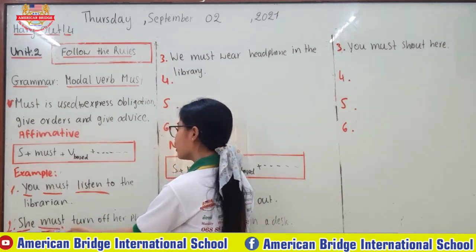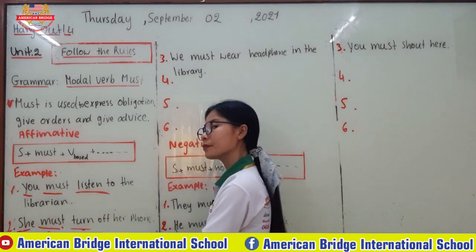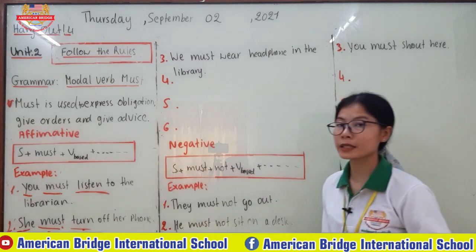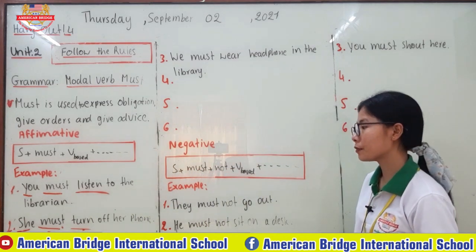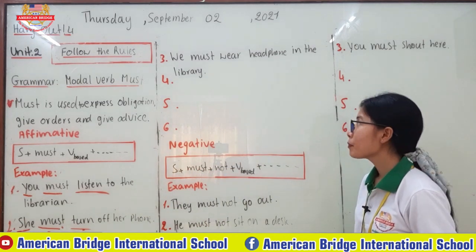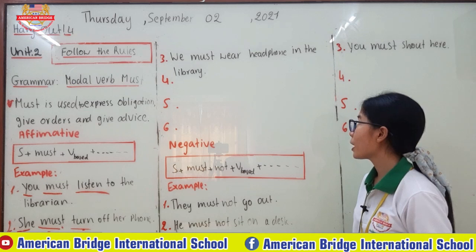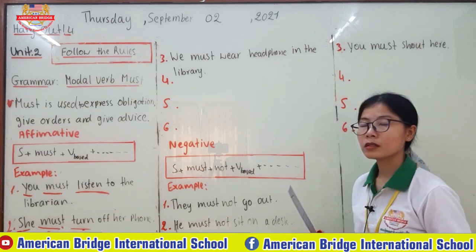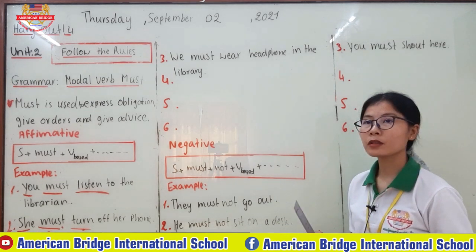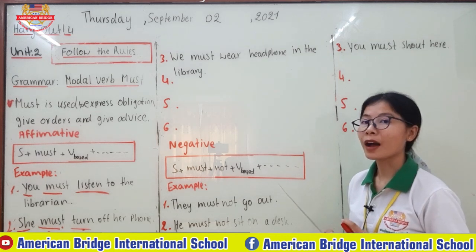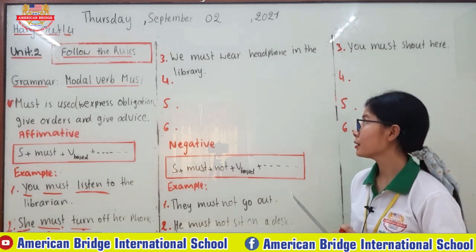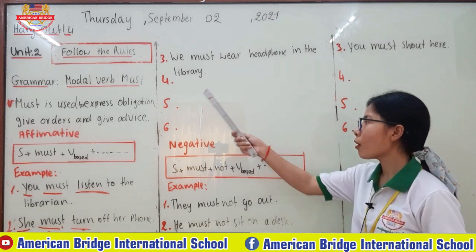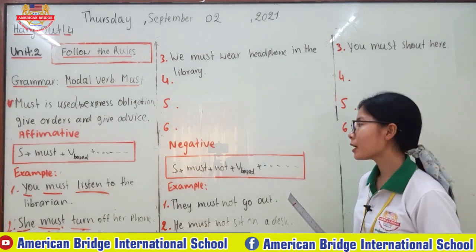Even with a third-person subject, the verb stays as verb base. For example: 'She must turn off her phone.' Number three: 'You must wear headphones in the library' — this is about giving someone advice. You can compare examples four, five, and six by yourself.